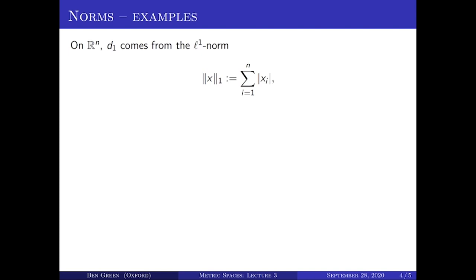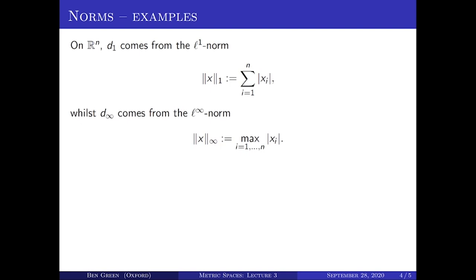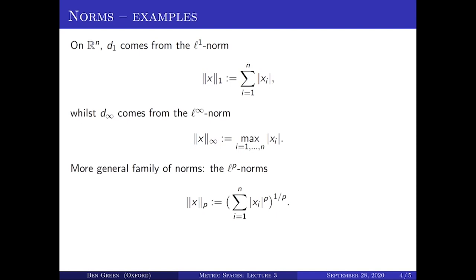Let's revisit those three examples of metrics on R to the n — as it turns out, they all come from norms. The D1 distance comes from the L1 norm: the norm of X in L1 is the sum of the absolute values of the components of X. The D infinity distance comes from the L infinity norm: the L infinity norm of a vector X is the max of the absolute values of the components of X. It's easy to check that these really are norms. And essentially by definition, the metric coming from this L1 norm is the D1 metric.